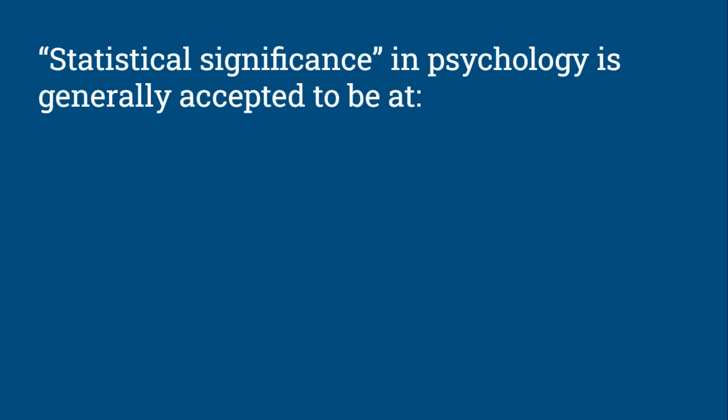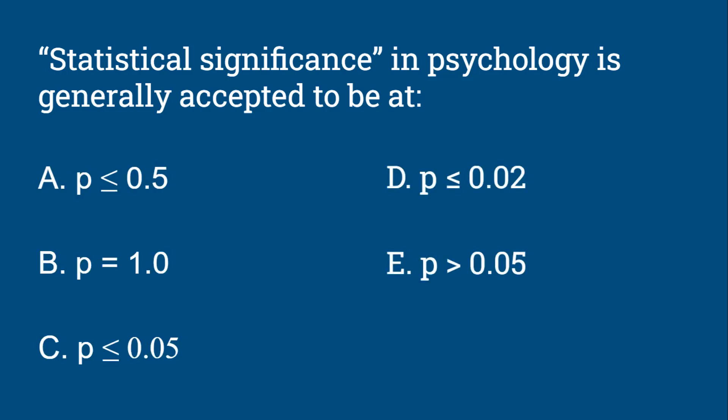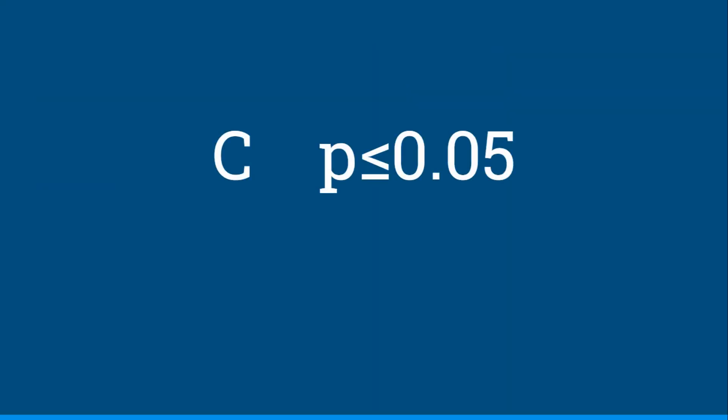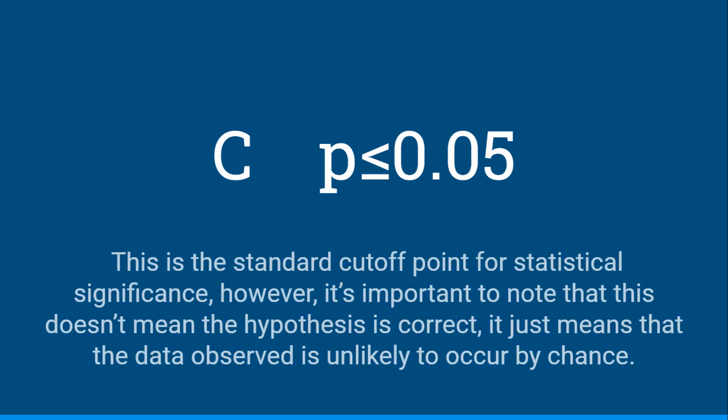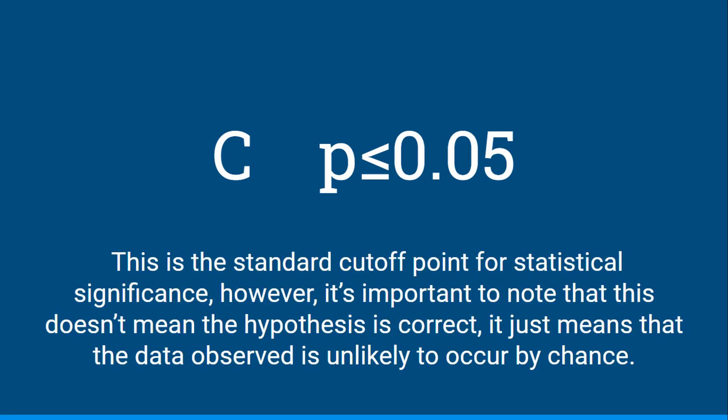Statistical significance in psychology is generally accepted to be at: p less than or equal to 0.5, p equals 1, p less than or equal to 0.05, p less than or equal to 0.02, or p greater than 0.05. The answer is p less than or equal to 0.05. This is the standard cutoff point for statistical significance; however, it's very important to note that this doesn't mean the hypothesis is necessarily correct — it just means the data observed is unlikely to occur by chance.